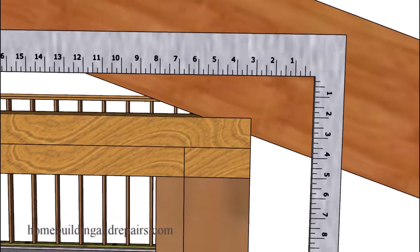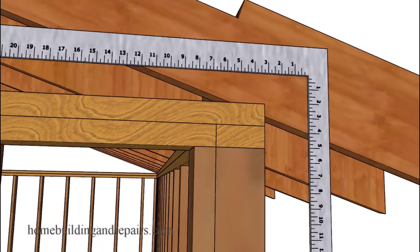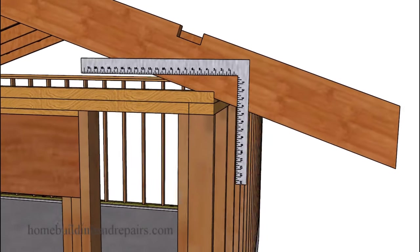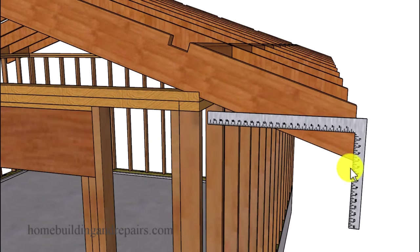So basically any vertical measurement or horizontal measurement after the roof rafter has been installed will be able to be created by using this example here, including the fascia board plumb cut angle.